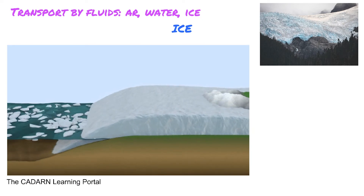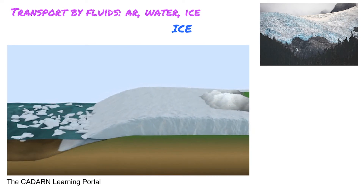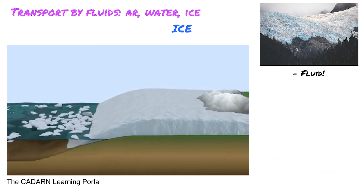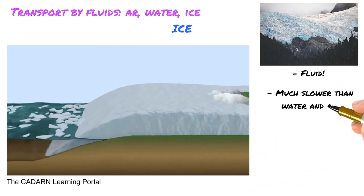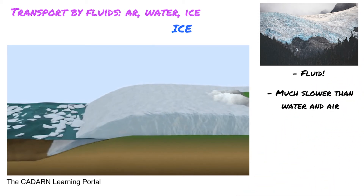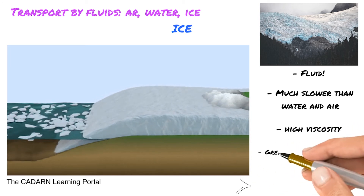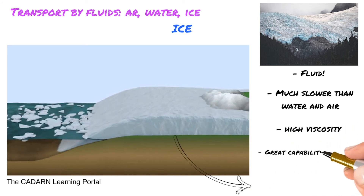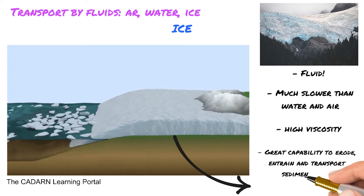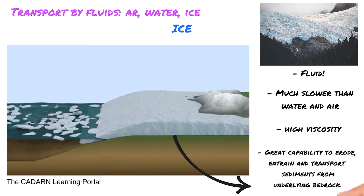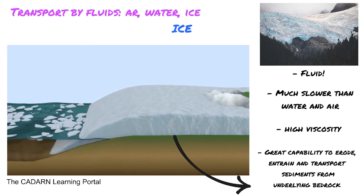Ice transport is very significant in polar regions covered by ice caps and in mountains with glaciers. Ice also behaves fluidly but moves much slower compared to water and air. Because of its high viscosity, ice has the ability to erode, incorporate, and transport large amounts of sediment from the bedrock over which it moves.